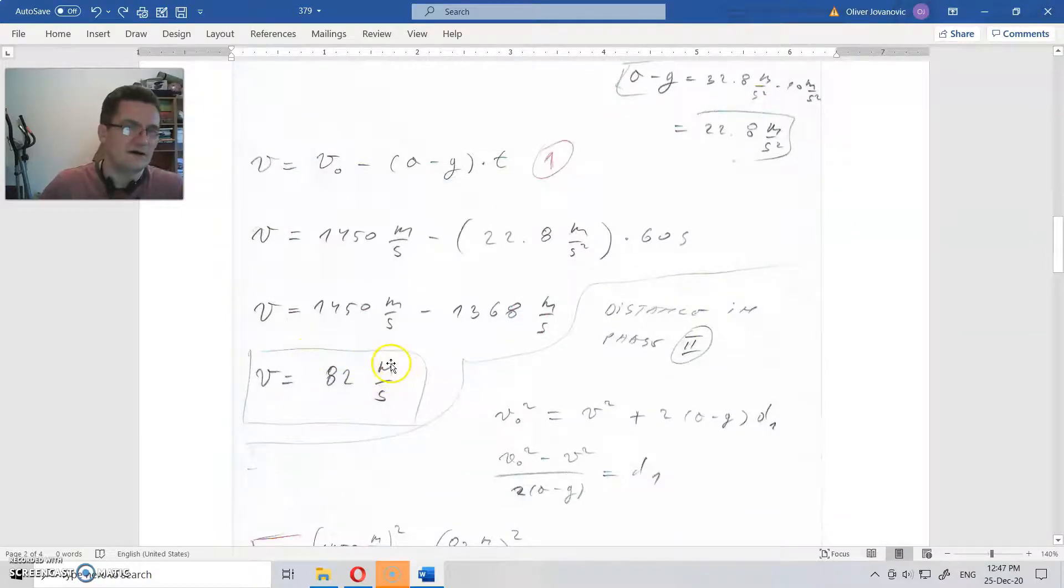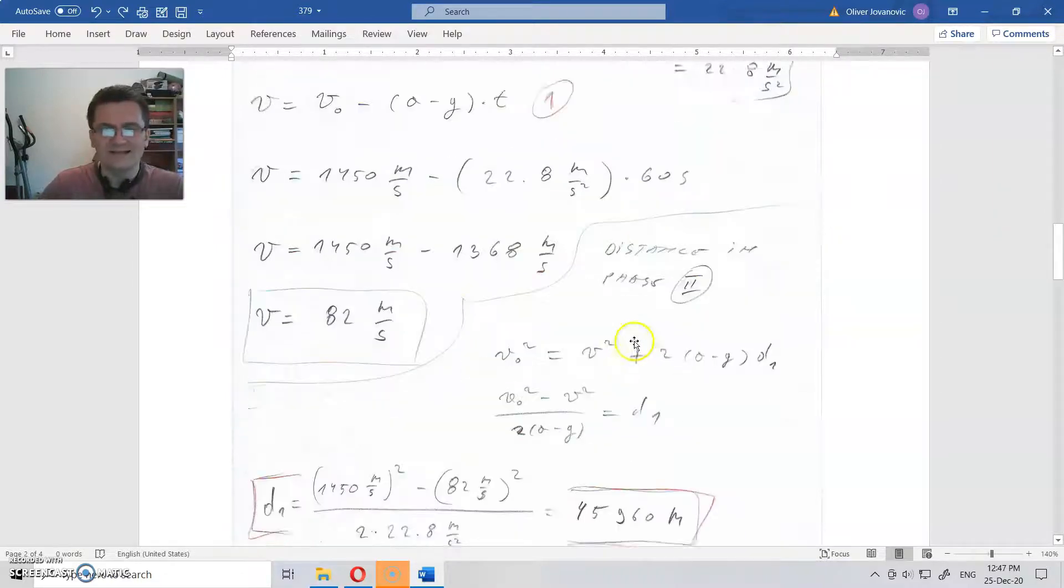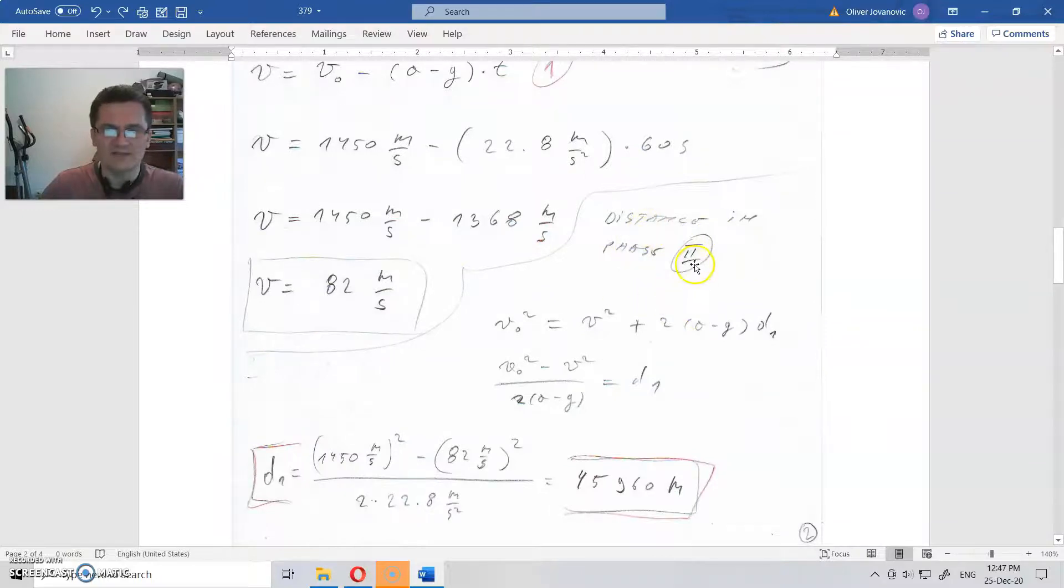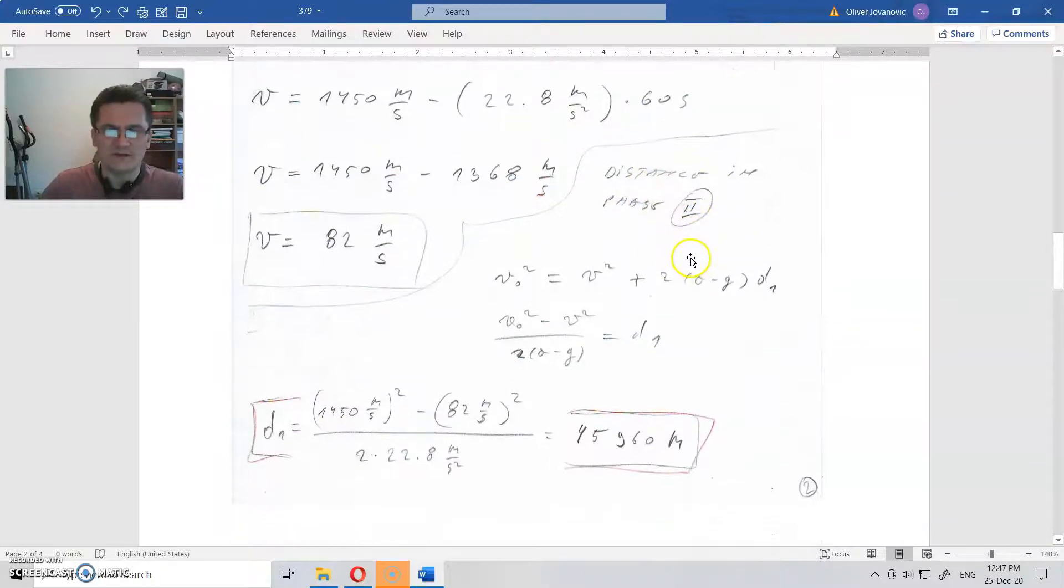It had 82 meters per second after the 60 seconds of slowing down. In that situation, the distance that is passed is according to this equation, which is the standard equation: 45,960 meters.